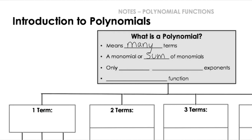When we have a polynomial, it's only a polynomial if it has whole number exponents. So no fraction exponents, no negative exponents — just whole numbers: 0, 1, 2, 3, and so on.